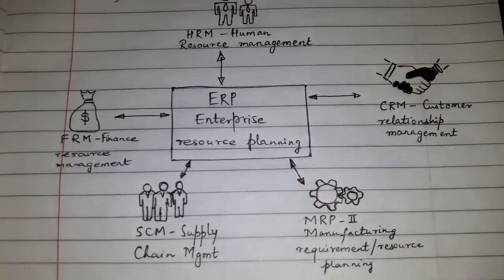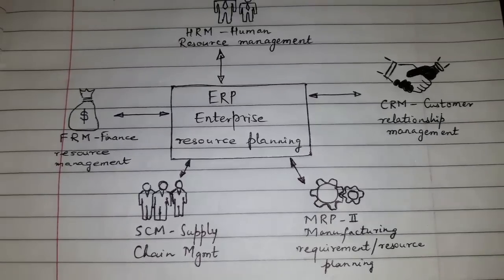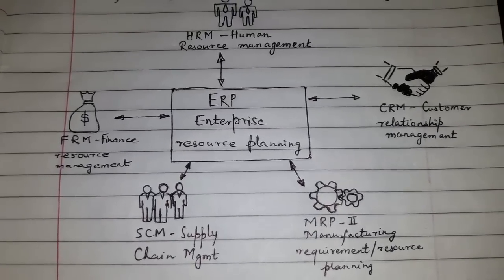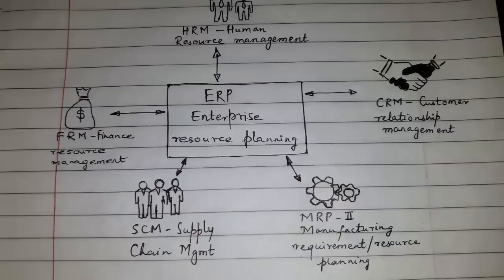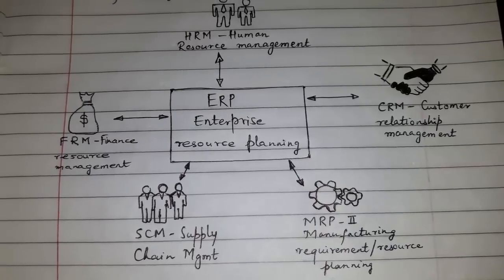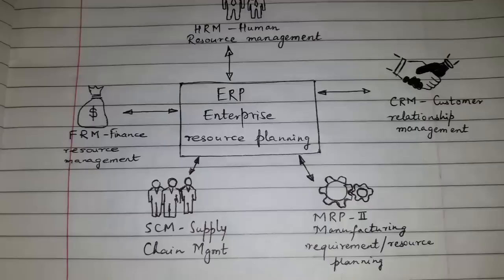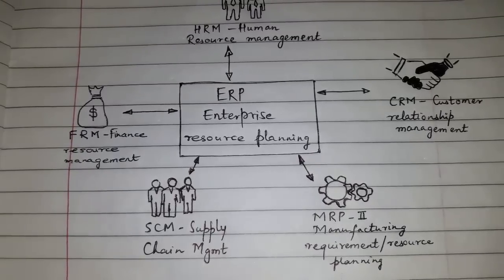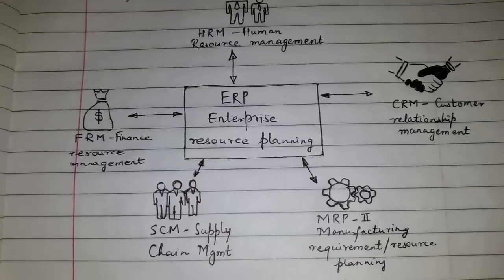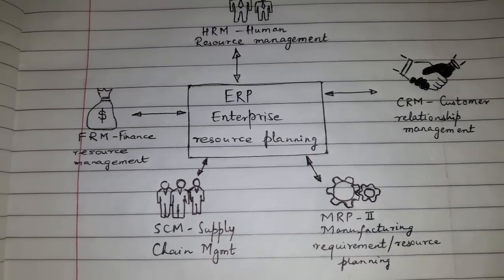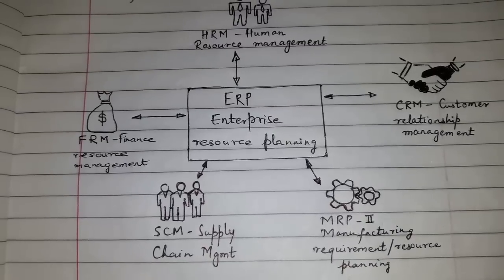Today's topic of discussion is ERP — Enterprise Resource Planning — explained in an easy way. Let us understand this with examples. ERP is being used by big companies like Godrej and Mahindra & Mahindra so that all departments have the details of what is happening in the company at any given point.